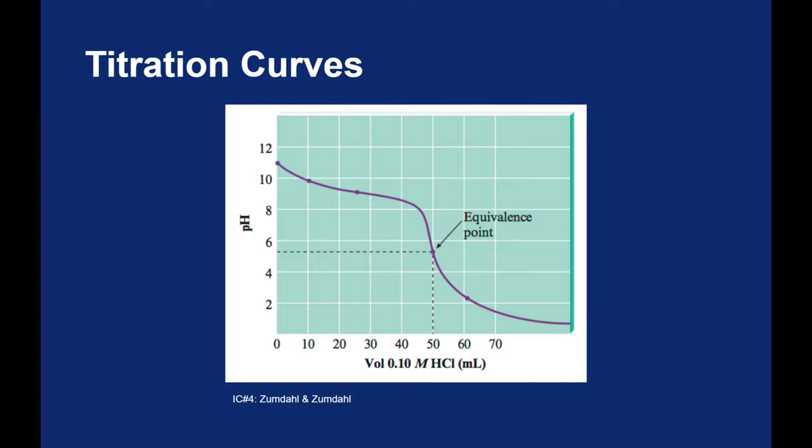The key point here is that if you look at the equivalence point, it is at a pH lower than 7, which means that the resulting salt that I am making is acidic. Again between a weak base and a strong acid, we would expect an acidic salt as a product.